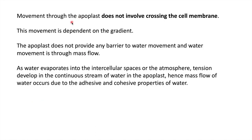Movement through the apoplastic route occurs through the cell wall — it does not involve crossing of water molecules through the cell membrane. Movement is totally dependent on the concentration gradient. The apoplast doesn't provide any restriction or barrier to water molecules, so water molecules move in mass flow through the apoplastic route. Some of the water evaporates in the intracellular space and some moves into the atmosphere, creating tension in the stream of water moving through the apoplastic route. Water's adhesive and cohesive properties help this mass flow movement.